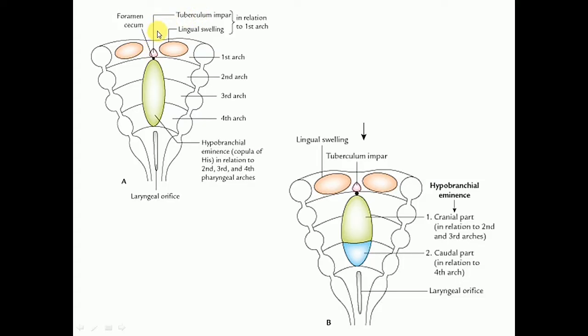Immediately behind the tuberculum impar, the epithelium proliferates to form a downgrowth known as the thyroglossal duct, from which the thyroid gland will develop. The site of this downgrowth is subsequently marked by a depression known as the foramen cecum.